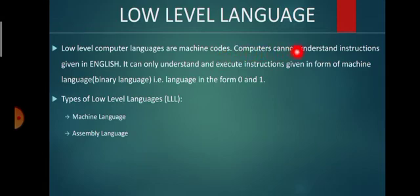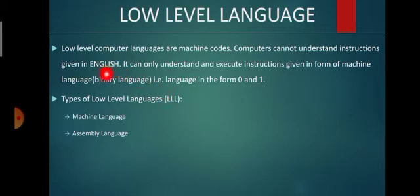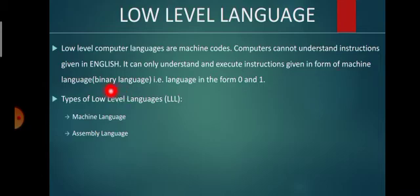Computers cannot understand instructions given in English because they are machines, and machines need their own type of language. For example, humans can understand only English and other human languages, but not machine languages. Therefore, computers can only understand and execute instructions given in the form of machine language, that is binary language — in the form of 0 and 1.